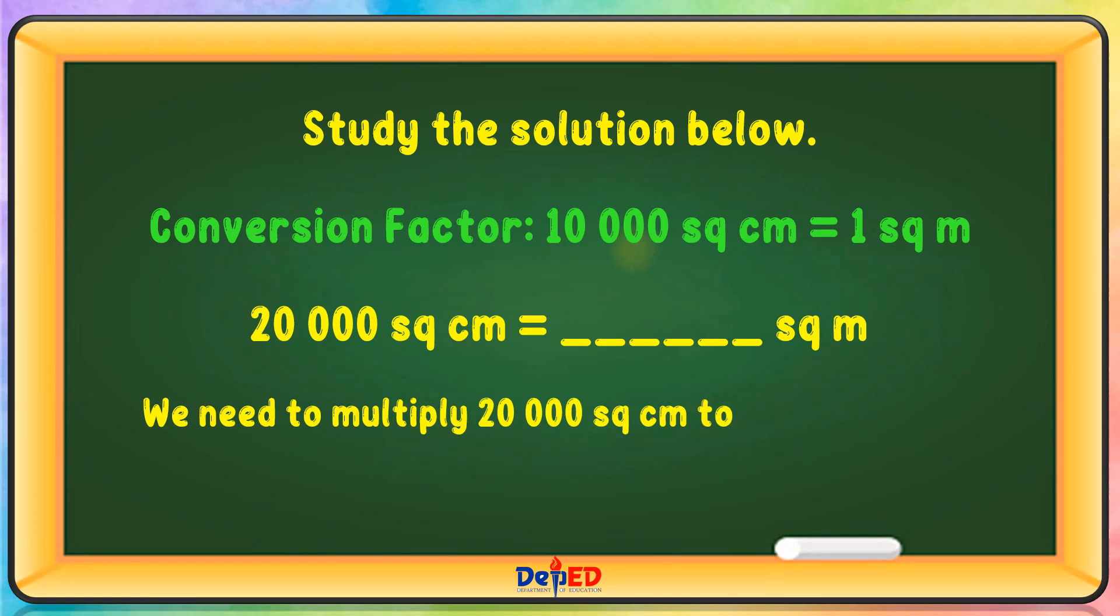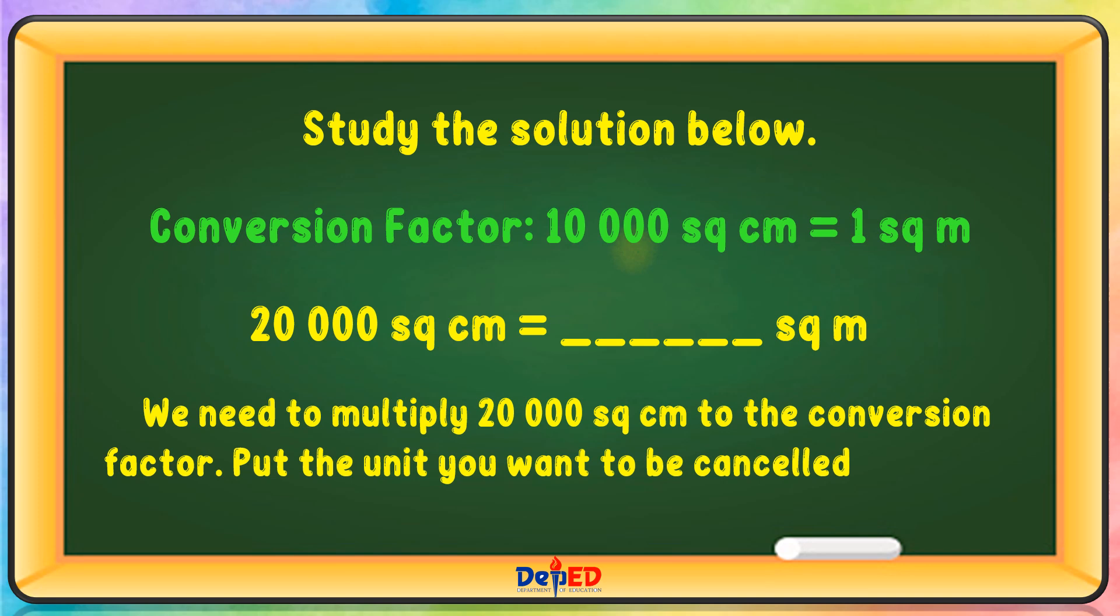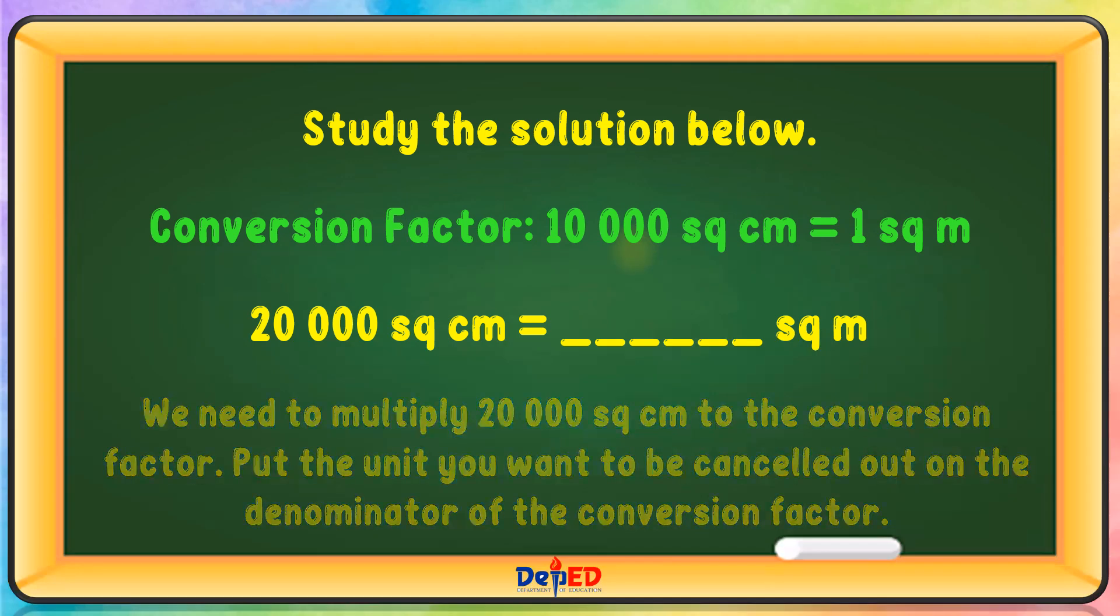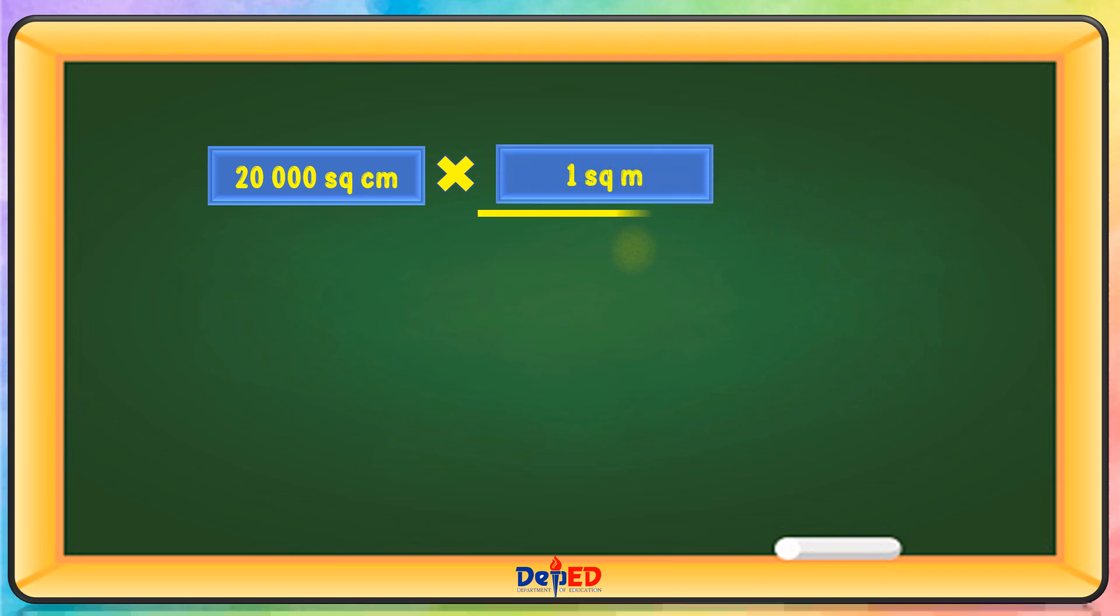We need to multiply 20,000 square centimeter to the conversion factor. Put the unit you want to be canceled out on the denominator of the conversion factor. 20,000 square centimeters multiply by 1 square meter divided by 10,000 square centimeters.